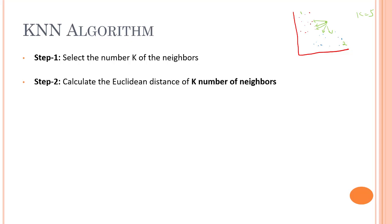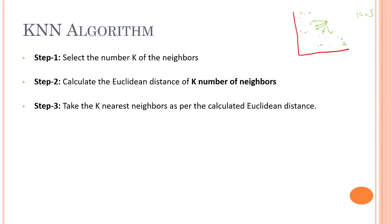After selecting K equals five, we have to find the Euclidean distance between the K number of neighbors. To find the distance between two points we use the Euclidean distance, and there are many more distance functions we'll discuss in the next video. The Euclidean distance is used to find the distance between two points, and by calculating it we get the nearest neighbors.